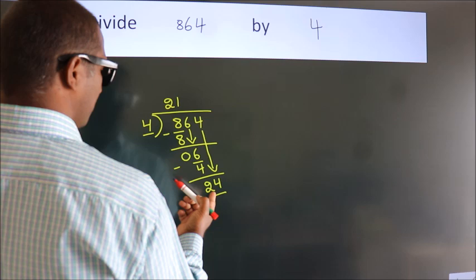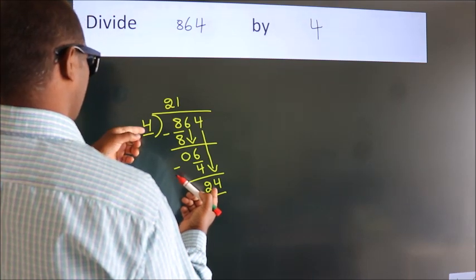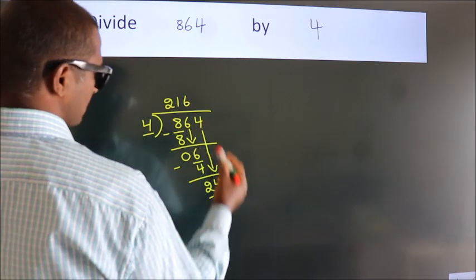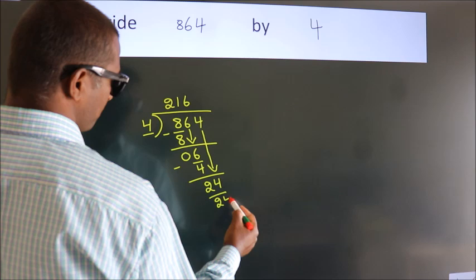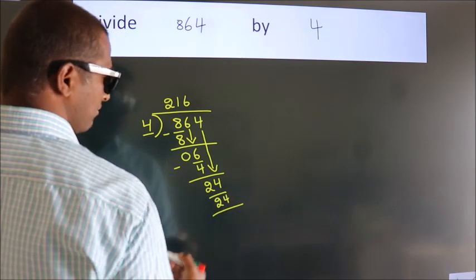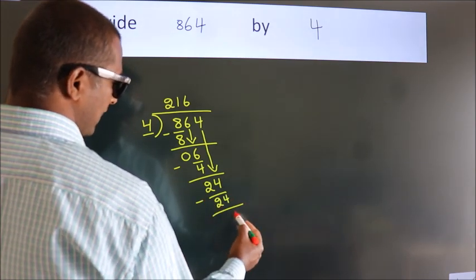When do we get 24? In 4 table, 4, 6, 24. Now, we subtract. We get 0.